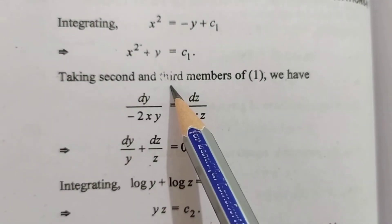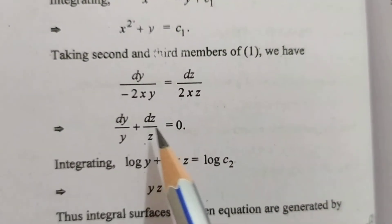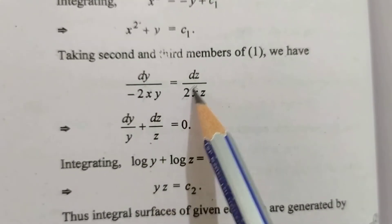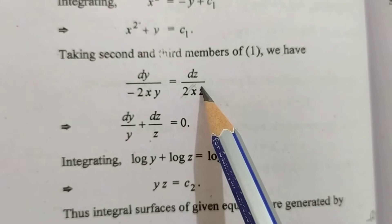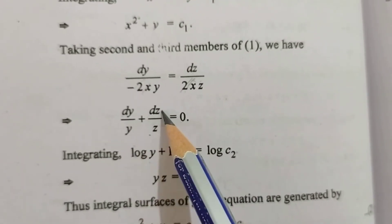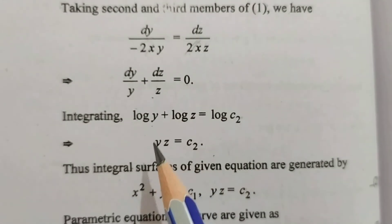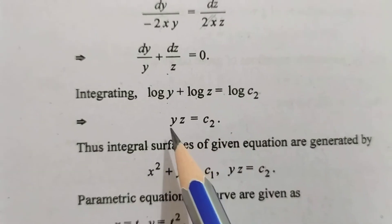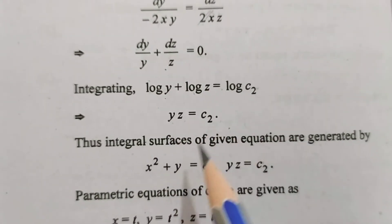Taking second and third member of 1, we have 2 ke saath 2 cancel, x ke saath x cancel. Isko hum right hand side le aayenge to positive ban jaega. dy upon y plus dz upon z equal to 0. Integration kar di, log y plus log z is equal to log c2. yz is equal to c2.